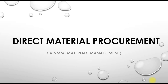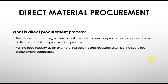In this video we are discussing the direct material procurement cycle in SAP. Direct material procurement is the process of procuring materials that are directly used for production purposes. For example, in the food industry, if we are making juices, we need ingredients and artificial flavors — these are direct materials used in production to make the juices.